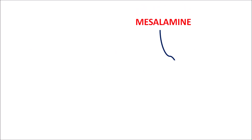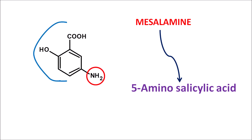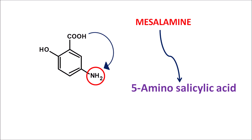Today we will discuss mesalamine. Mesalamine is a 5-aminosalicylic acid with a simple structure. We can observe the 5-amino group attached to salicylic acid. Within the name, we can find where the amine group is attached with respect to carboxylic acid — this amine group is attached at the meta position, which is why we have the prefix 'mes' within mesalamine. So it is a meta-substituted salicylicamine, or simply 5-aminosalicylic acid.